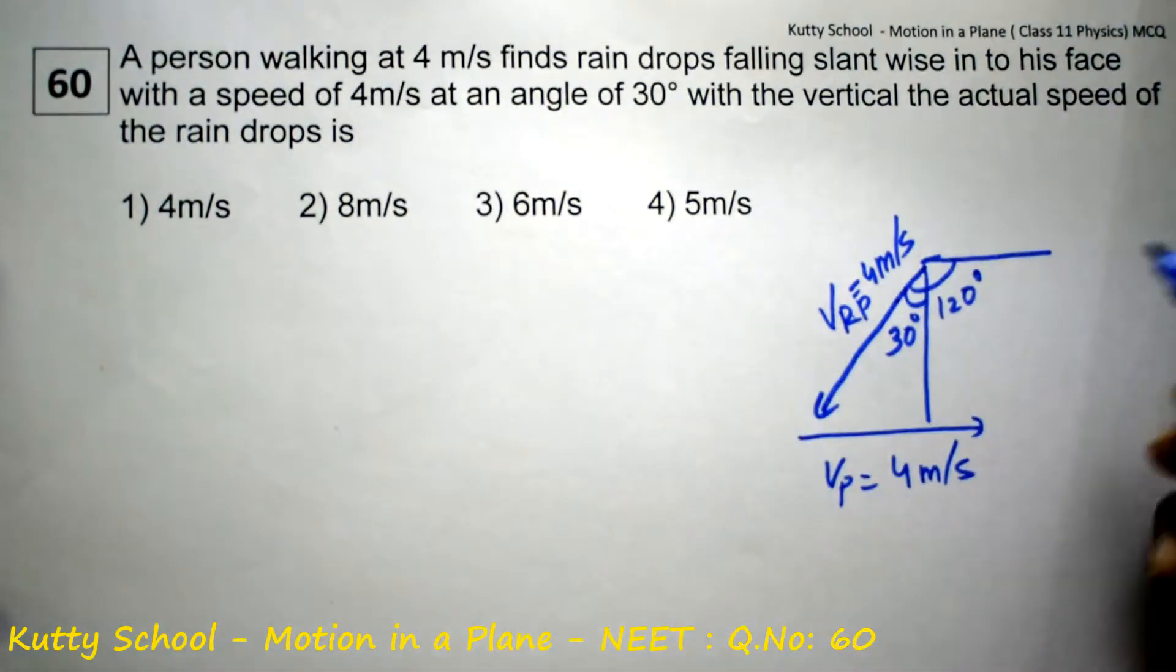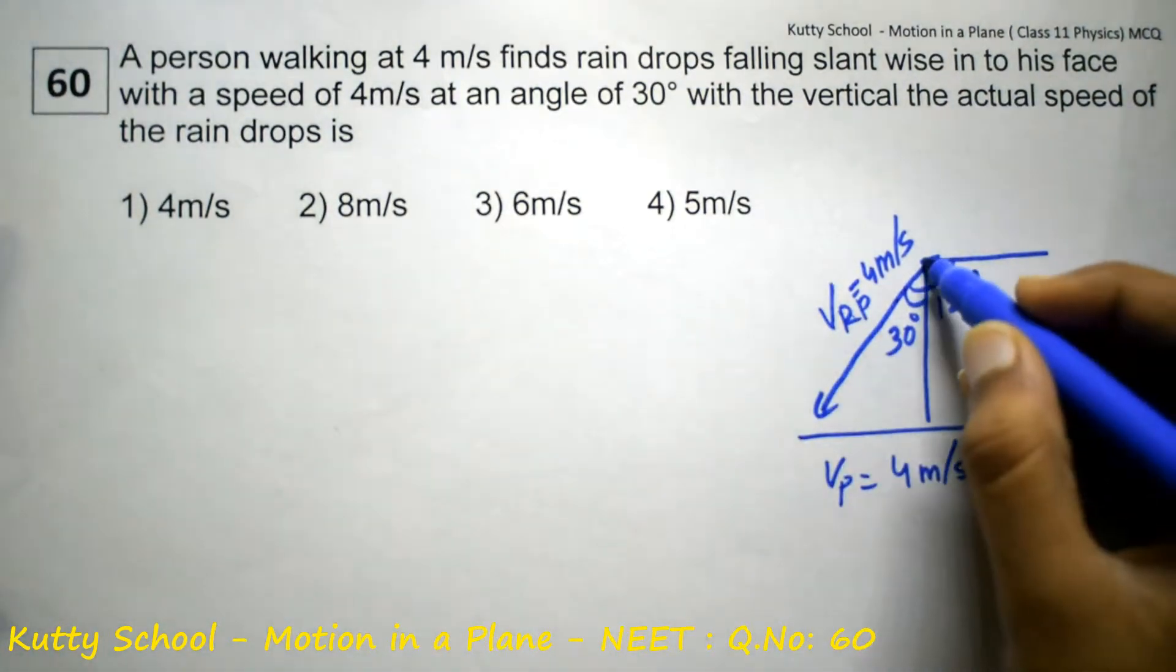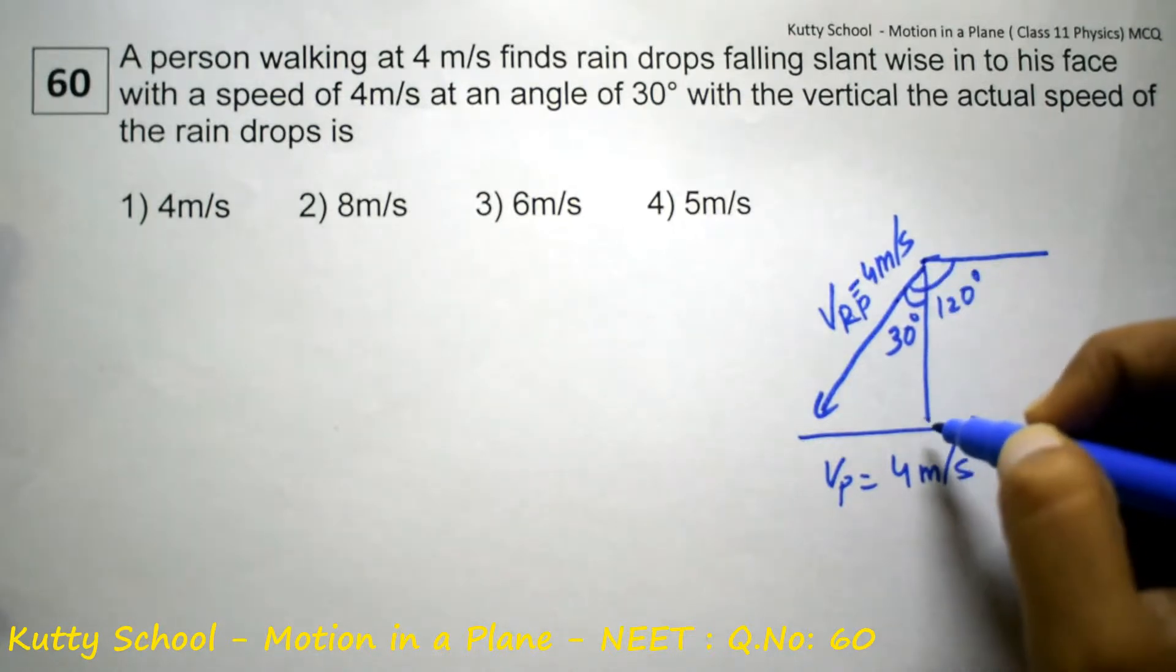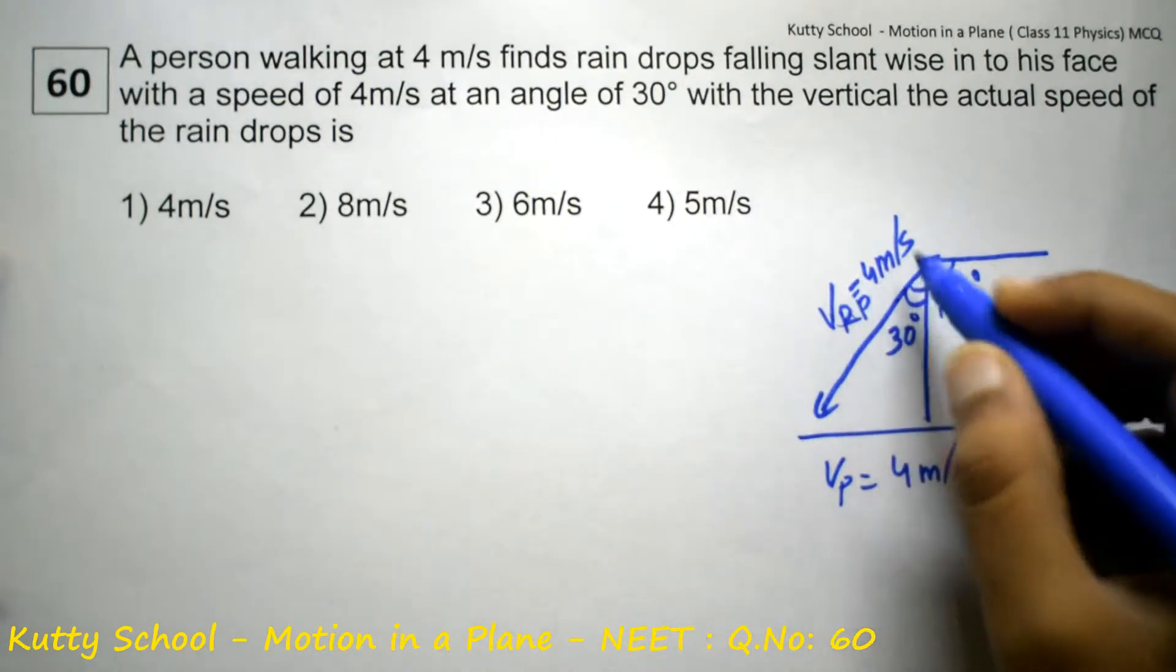The actual speed of the raindrops is what we need to find. We have the raindrops velocity with respect to the person.